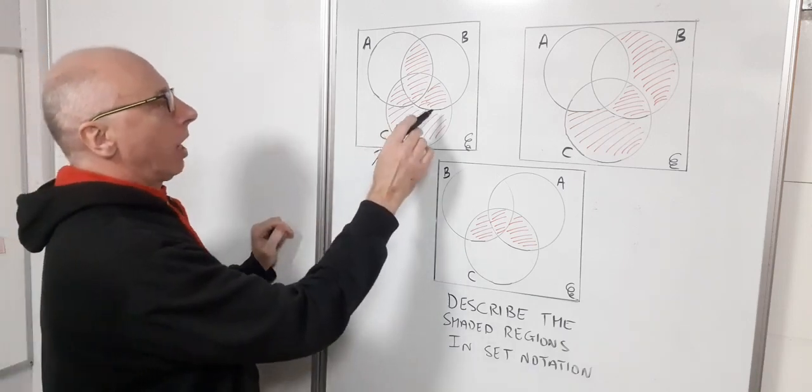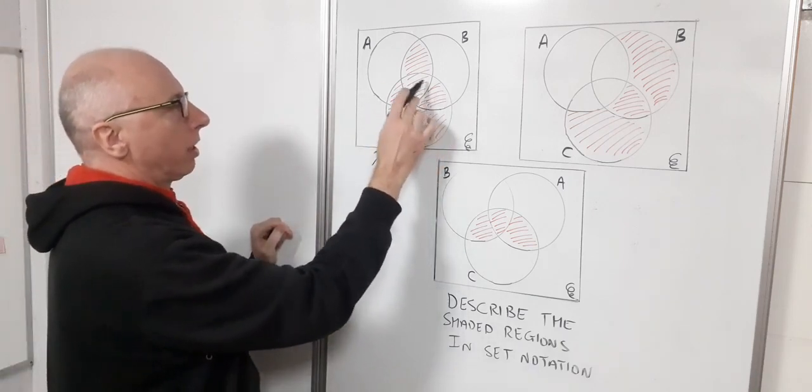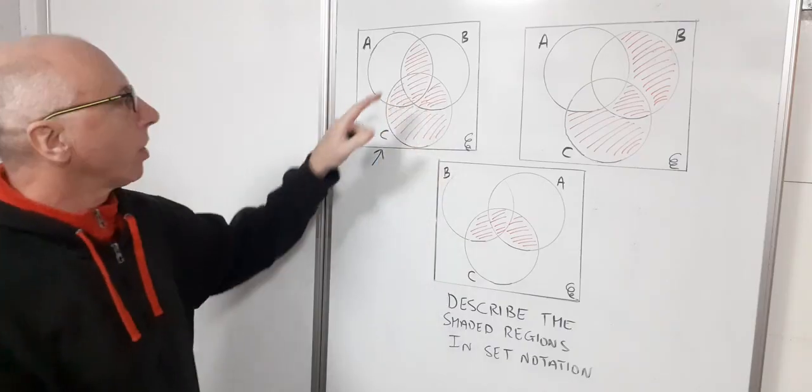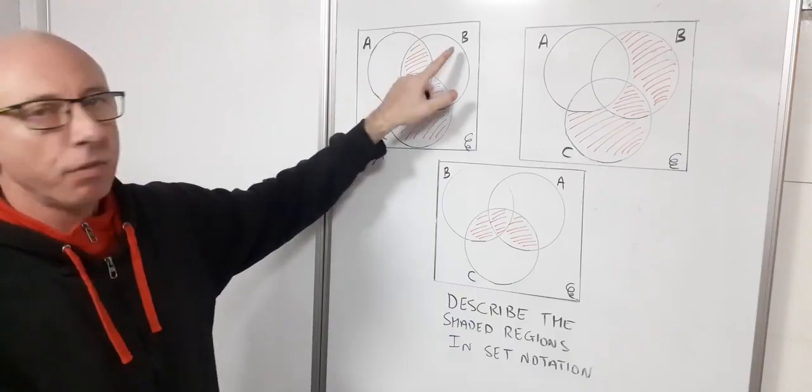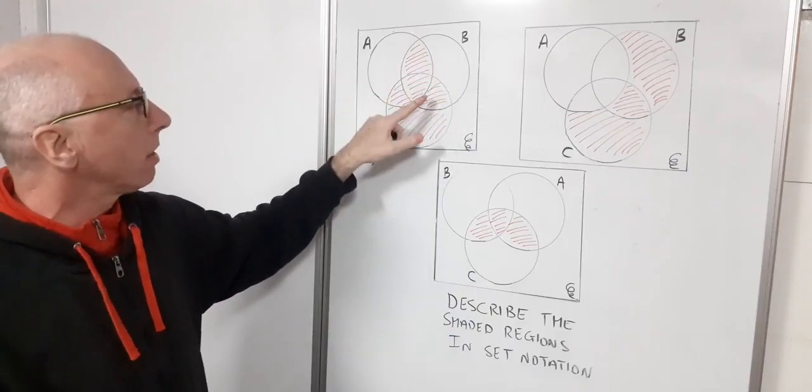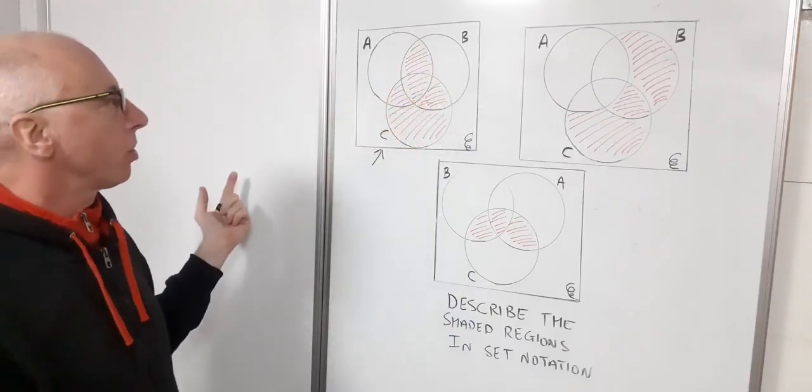I can see I've got all of C shaded, and I've got this bit here where A and B meet but not all of A and B, just these bits. So how am I going to describe that?